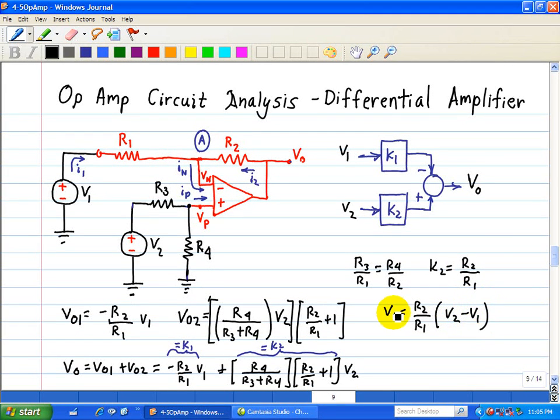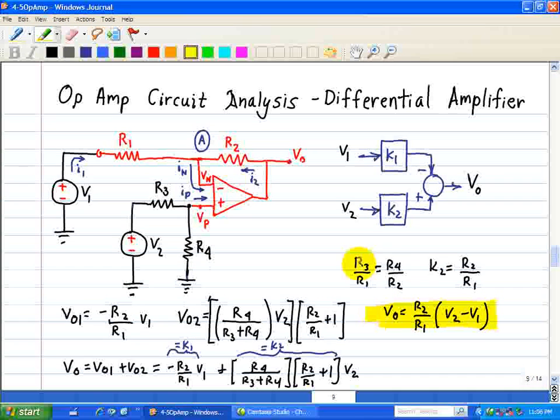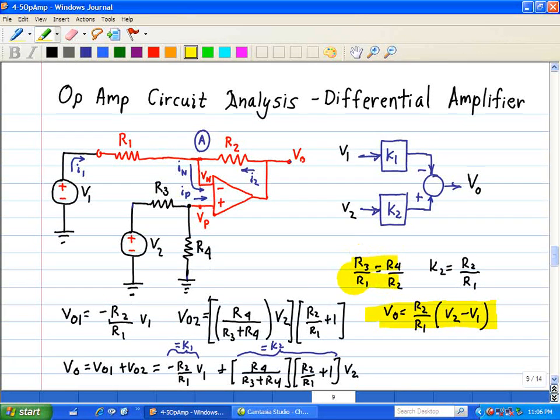So, we can see the output is proportional to the difference between V2 and V1. Hence, this is our subtractor operation. And I'll highlight our final result when this is the result of this constraint.